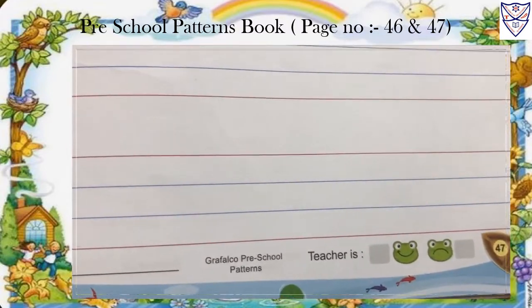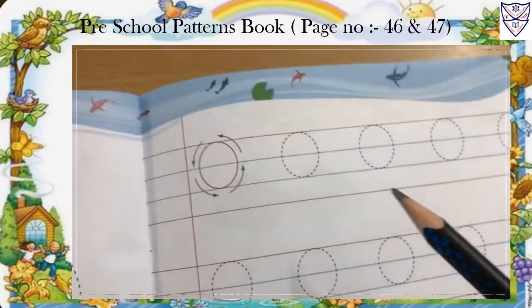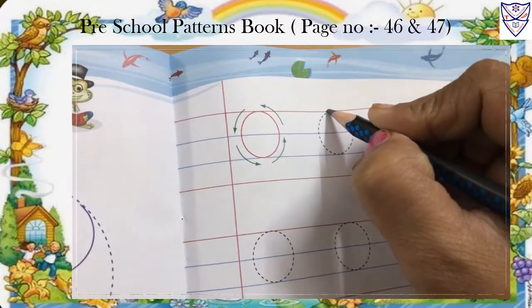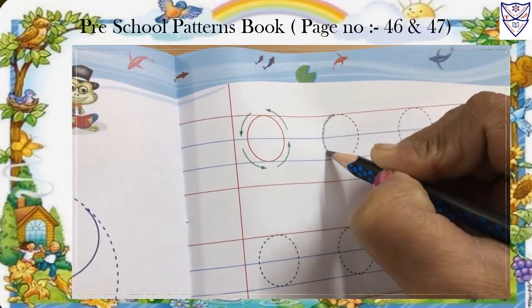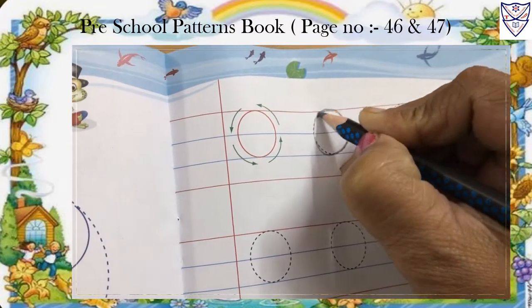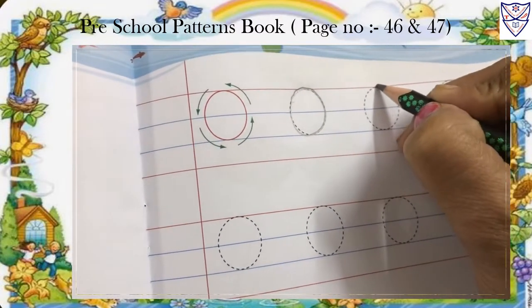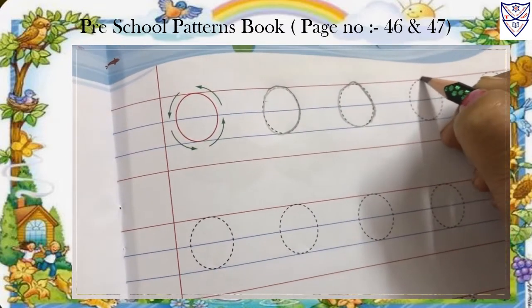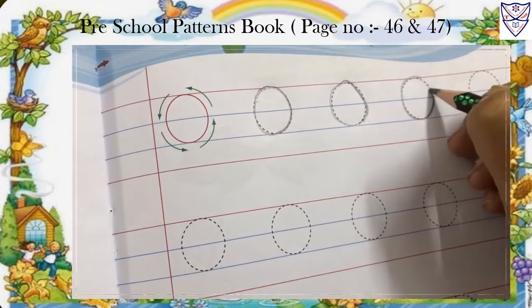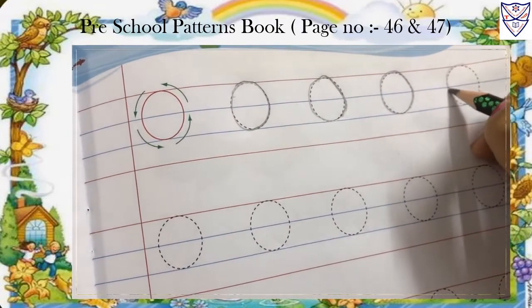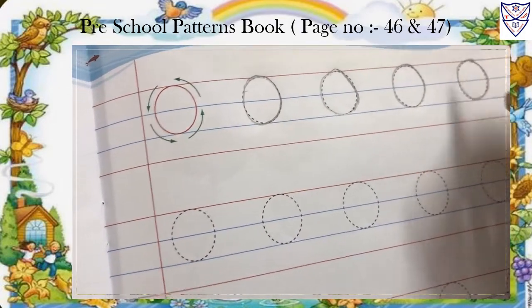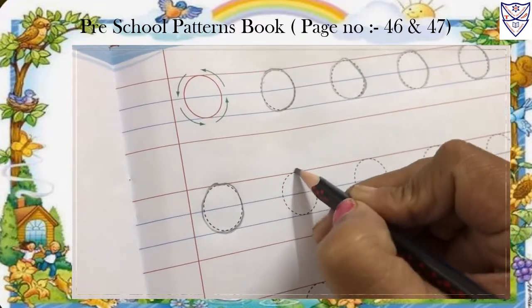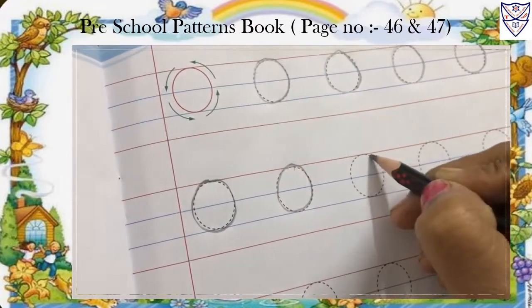Page number 47 — trace these circles. Like this, you have to trace this circle. Trace it nicely. Like this way, you have to trace this circle.